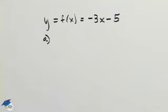We're given y equals f of x equals negative 3x minus 5. In Part A we're asked to find the inverse of f.